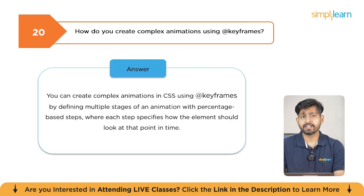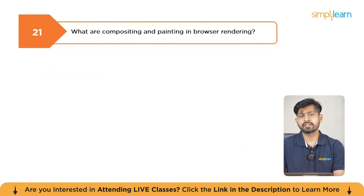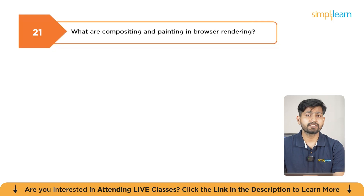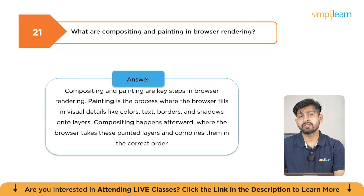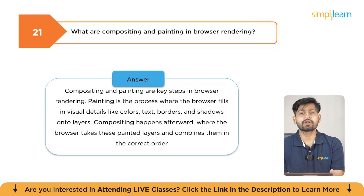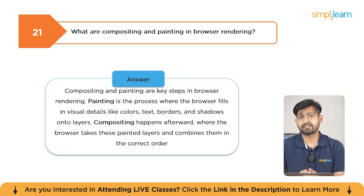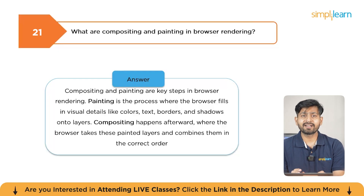What is compositing and painting in browser rendering? Compositing involves combining layers of elements in the browser to create the final image, while painting is the process of rendering styles such as color and texture onto elements. Both are critical for performance in complex designs.